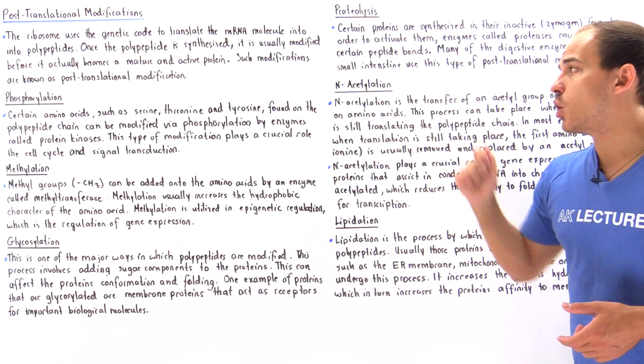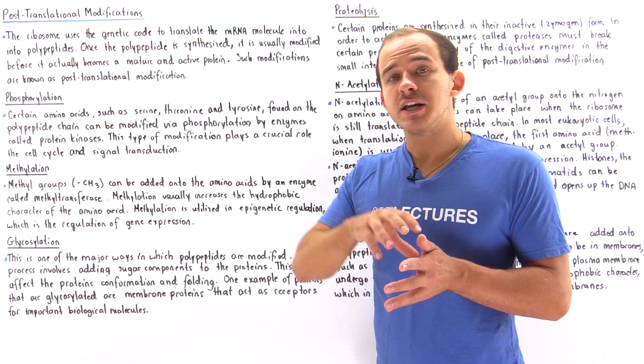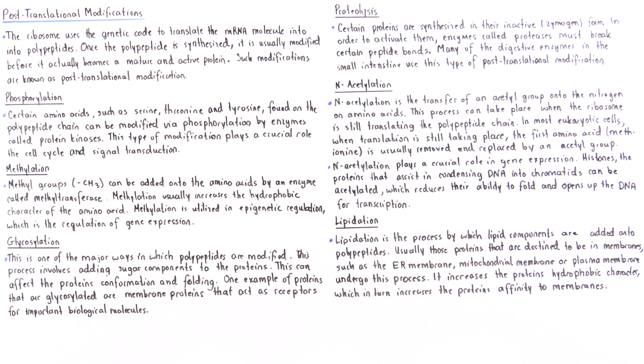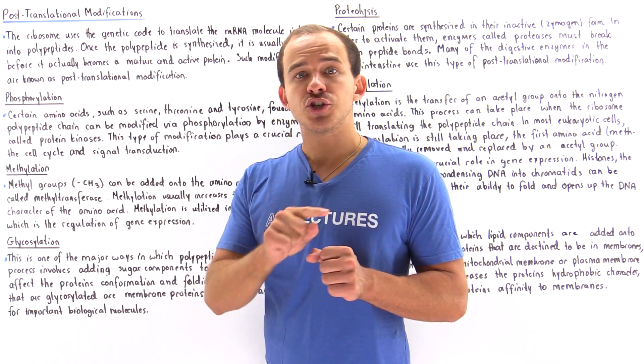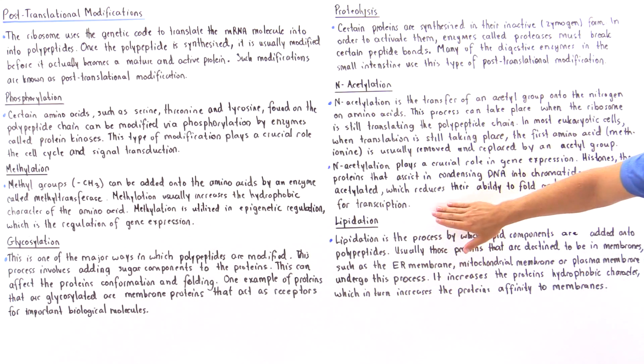This process is known as N-acetylation. N-acetylation plays a crucial role in gene expression. Histones, those proteins that are involved in condensing our DNA into chromatids, can be acetylated, which reduces their ability to fold and opens up our DNA so that that DNA section can undergo the transcriptional process.